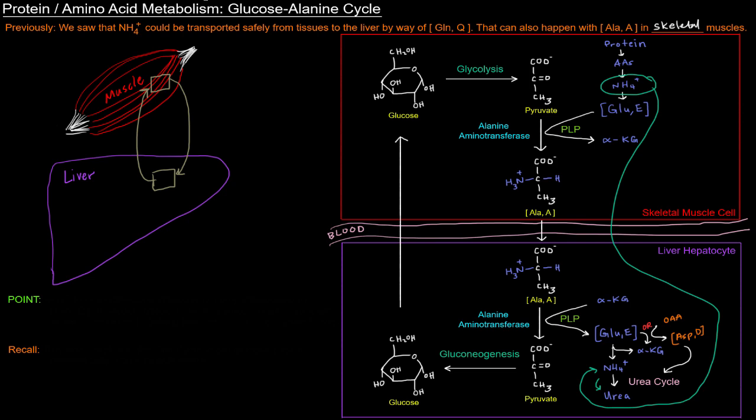So the point here is that the ammonium ion from extrahepatic tissues is not only transported by glutamine. That's one point here. In muscle tissue, alanine can do the job, especially because this contributes to getting glucose back to the muscle tissue so that skeletal muscle tissue can metabolize that for energy.